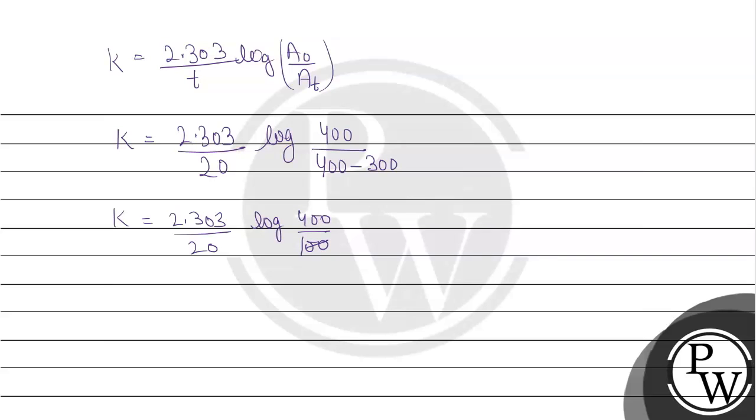So K will be equal to 2.303 divided by 20 log of 400 divided by 100. So from here we can see this got cancelled. And log 4 which is 0.6020. 2.303 divided by 20 multiplied by 0.6020, which passes as B option, that is absolutely correct. It will be 0.3010 and on multiplication we will get it as 0.0693 per minute. So we have found out the rate constant.